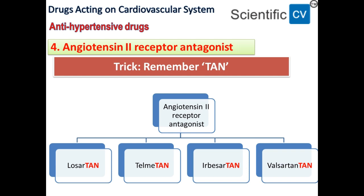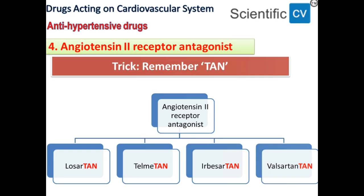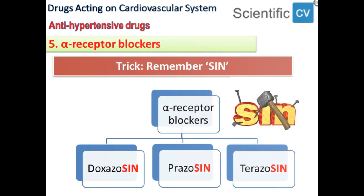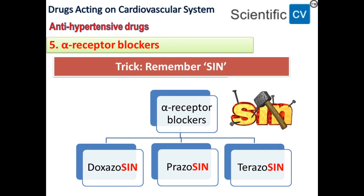The next category is alpha receptor blockers. The trick is to remember '-sin'. The drugs are doxazosin, prazosin, and terazosin. So the trick to remember this class is the suffix '-sin'.